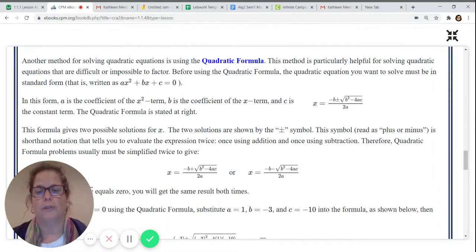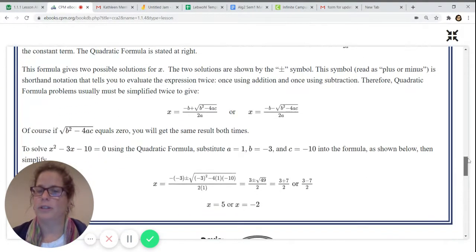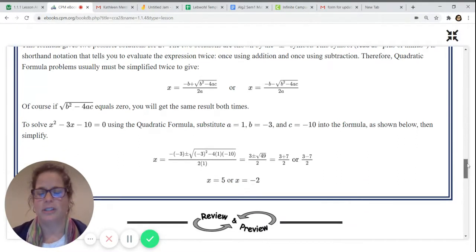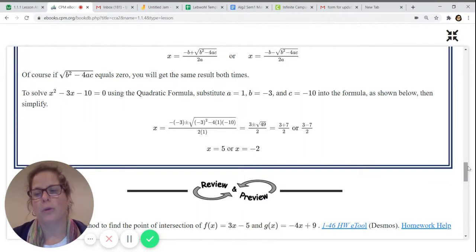It'll give you two possible solutions, and the key is that plus or minus right here. Because that's the key that helps you evaluate it two times, once with plus to give you one of the solutions and once with minus. The only time you don't get two solutions is sometimes what's underneath the square root is zero, and that will give you just one possible solution. And here's a great example to just help you see how you work it through.